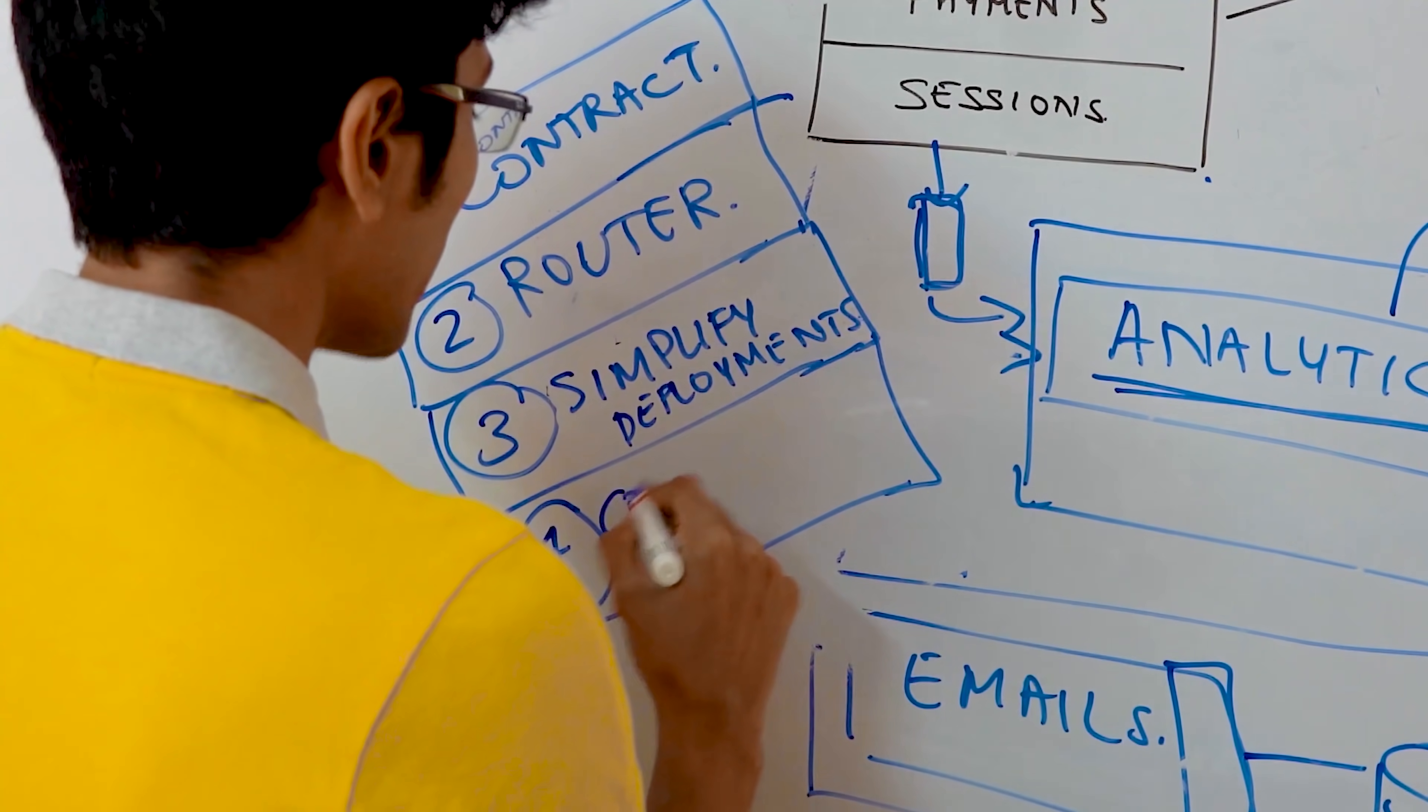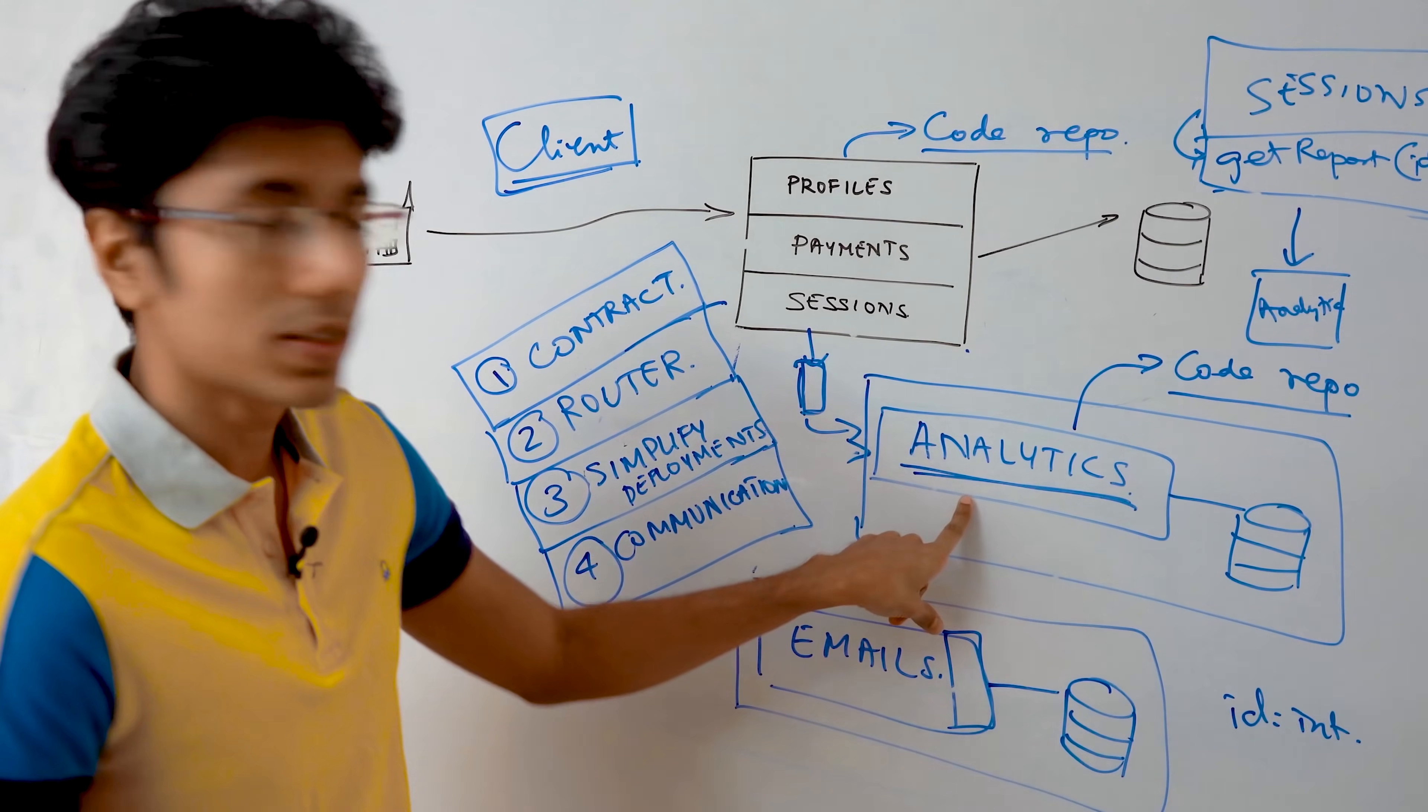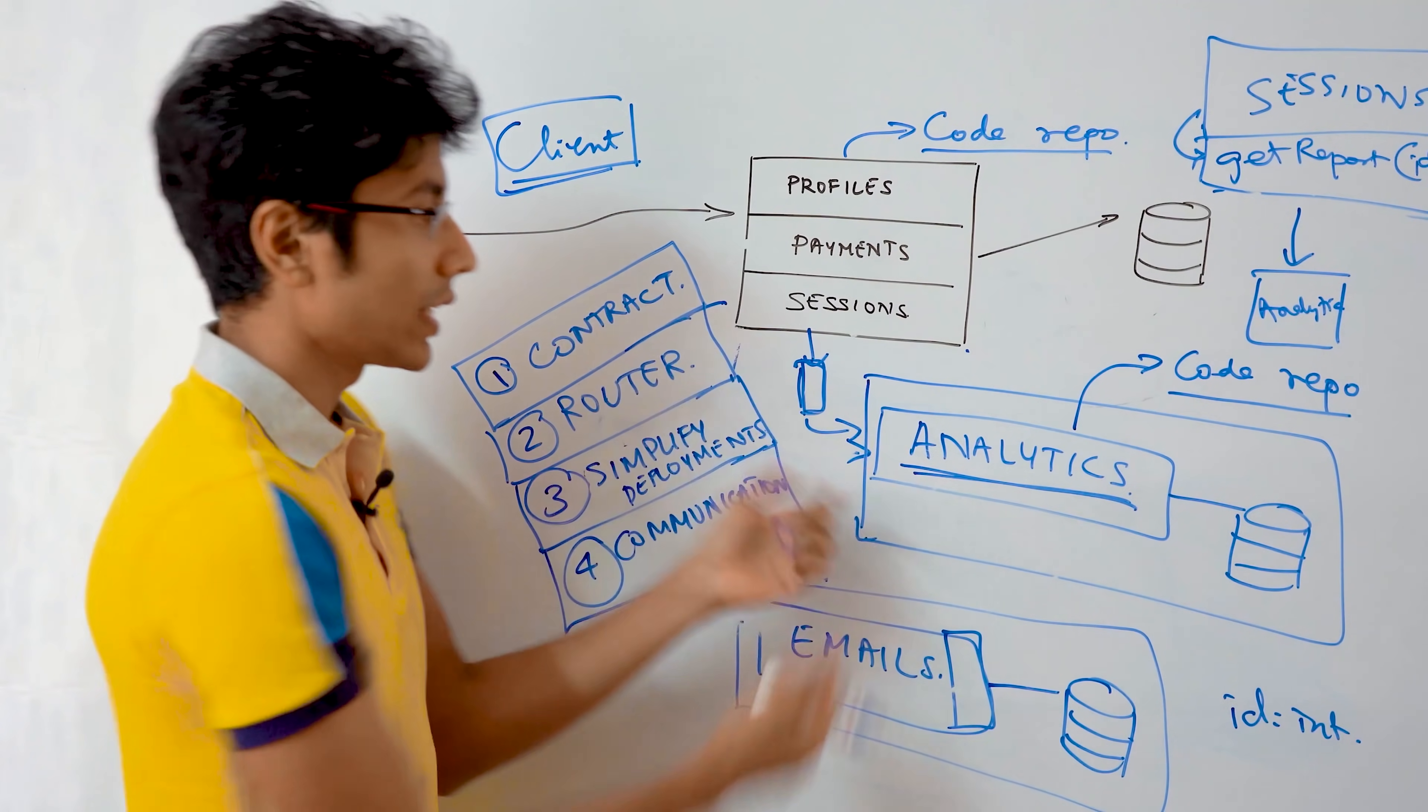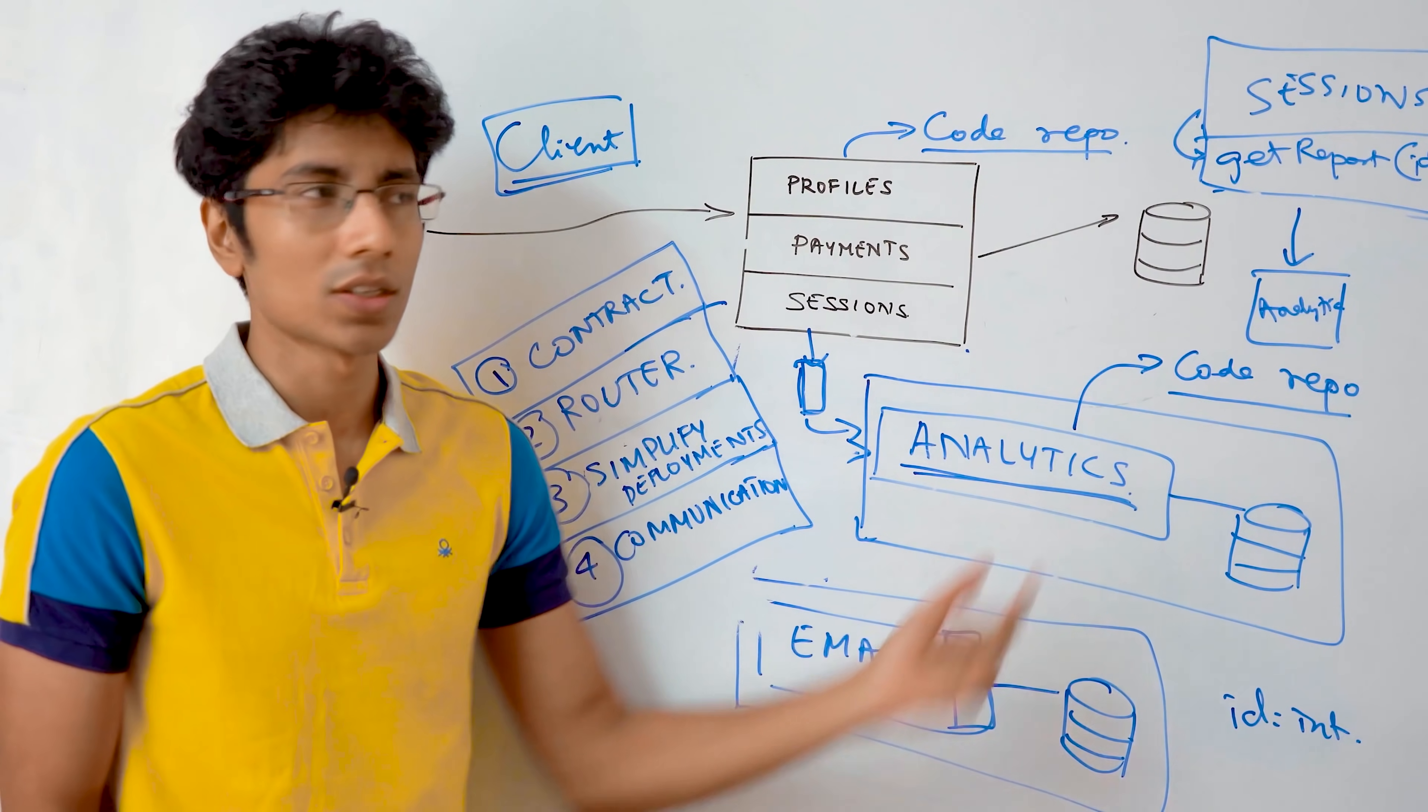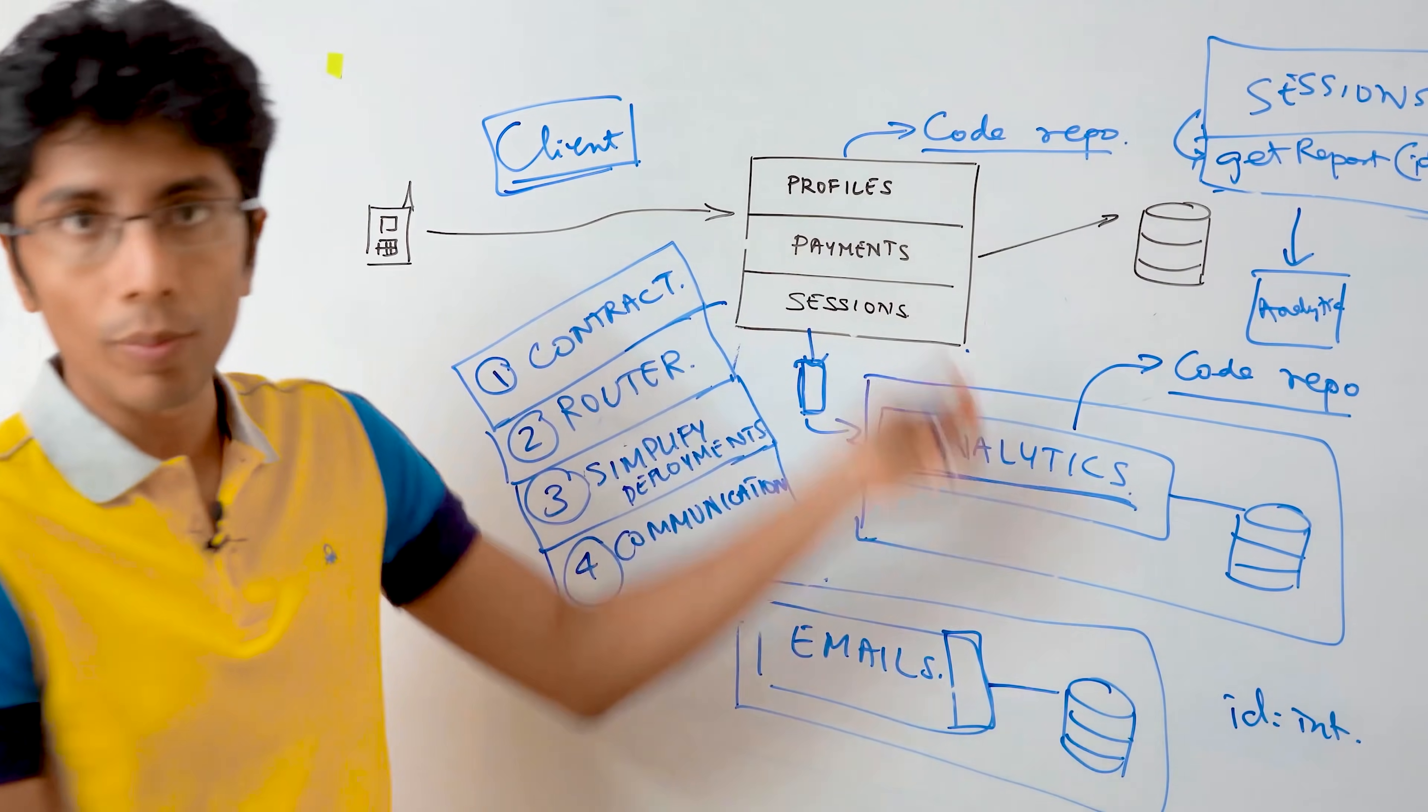The fourth one is that communication between services can be varied. Let's say the session service talks to the analytics service by using a message queue. Because if the message doesn't reach the analytics team, if this event doesn't reach the analytics service, what's the big deal? You know, the reports will be wrong, but it's not like the user is going to drop off.